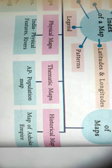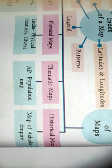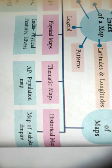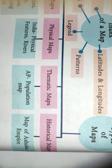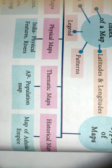The last type is historical maps. Historical maps represent the maps of empires — for example, the Ashoka Empire. These maps indicate so many kings' empires or emperors' empires, like Akbar and the Mughal dynasty.